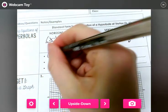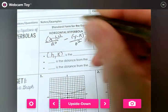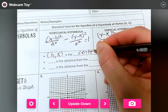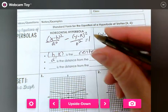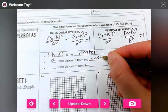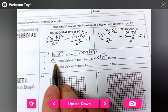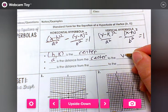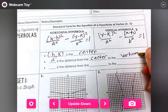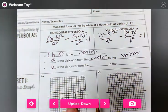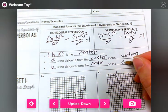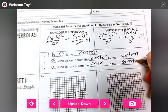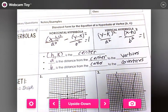h,k is the center. a is the distance from the center to the vertices. b is the distance from the center to the co-vertices.